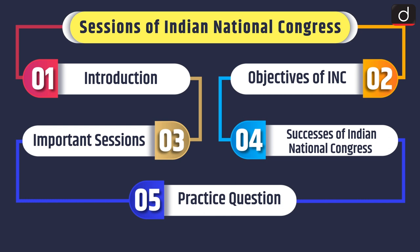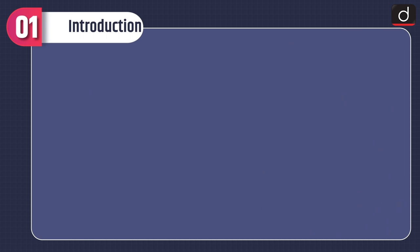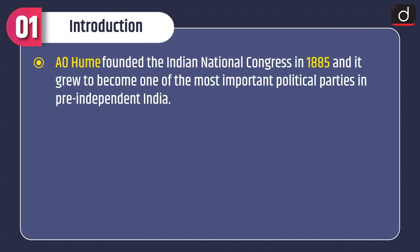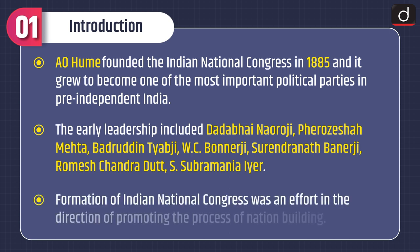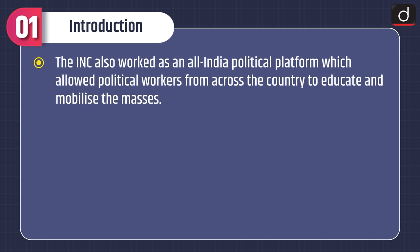Let's have a brief introduction of the topic. A.O. Hume founded the Indian National Congress in 1885 and it grew to become one of the most important political parties in pre-independent India. The early leadership included Dada Bhai Naoroji, Feroz Shah Mehta, Badruddin Tyabji, W.C. Banerji, Surendranath Banerji, Ramesh Chandradath, and S. Subramania Ayer. Formation of Indian National Congress was an effort in the direction of promoting the process of nation-building. The INC also worked as an all-India political platform which allowed political workers from across the country to educate and mobilize the masses.